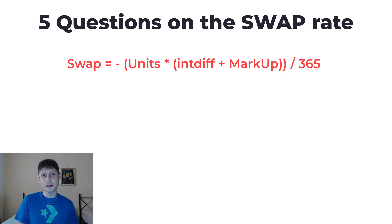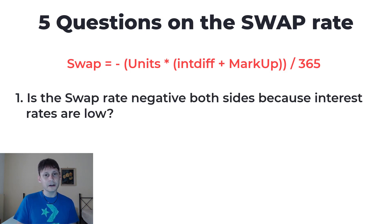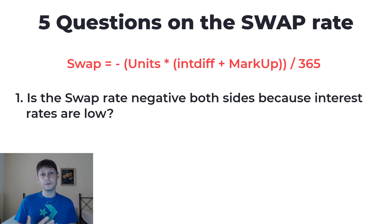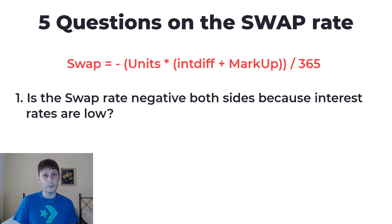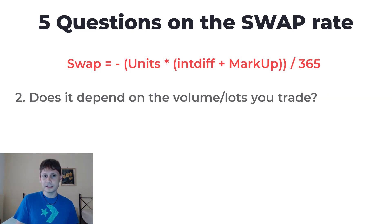The first question: is the swap rate negative on both sides because interest rates are low? From the formula, you can see it doesn't really matter if interest rates are low or high — what matters is the difference between the two interest rates. With GBP/USD we had a difference of 0.15%. It would have been exactly the same if the Federal Reserve rate was 6% and the Bank of England rate was 5.85% — the difference would still be 0.15%. So it's not about whether rates are high or low; it's about the difference between the two.